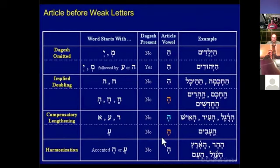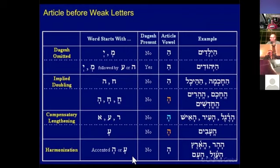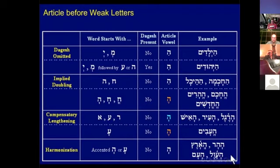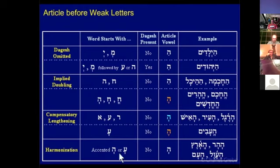Finally there's harmonization, which happens when the first letter of the word is an accented He or Aleph with a Kamets. The vowel under the first root letter harmonizes to match the vowel under the article. The suggestion is simply to memorize these four words: Eretz becomes Ha'aretz — the land; Har becomes Ha'har; Ha'am — the people; Ha'avell — the iniquity. This tends to happen for monosyllabic words or words with the accent on the first syllable.